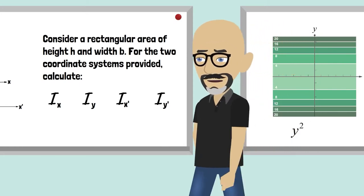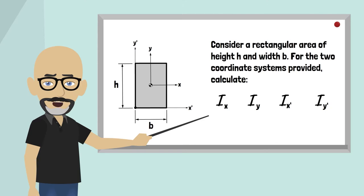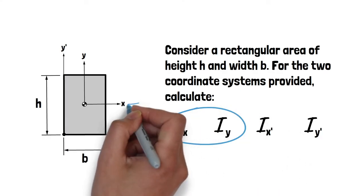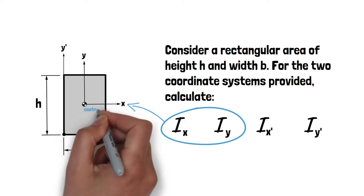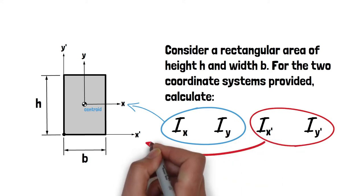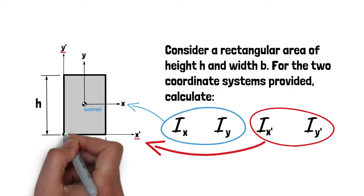So let's take a look at the following problem. We have a rectangular cross section of width b and height h, with two defined axis systems. We are asked to calculate four area moments of inertia associated with the two different axis systems. Ix and Iy are to be calculated for the xy axes located at the centroid of the rectangle, while Ix' and Iy' are to be calculated for a parallel set of axes, the x' and y' axis system, located at the lower left corner of the rectangle.